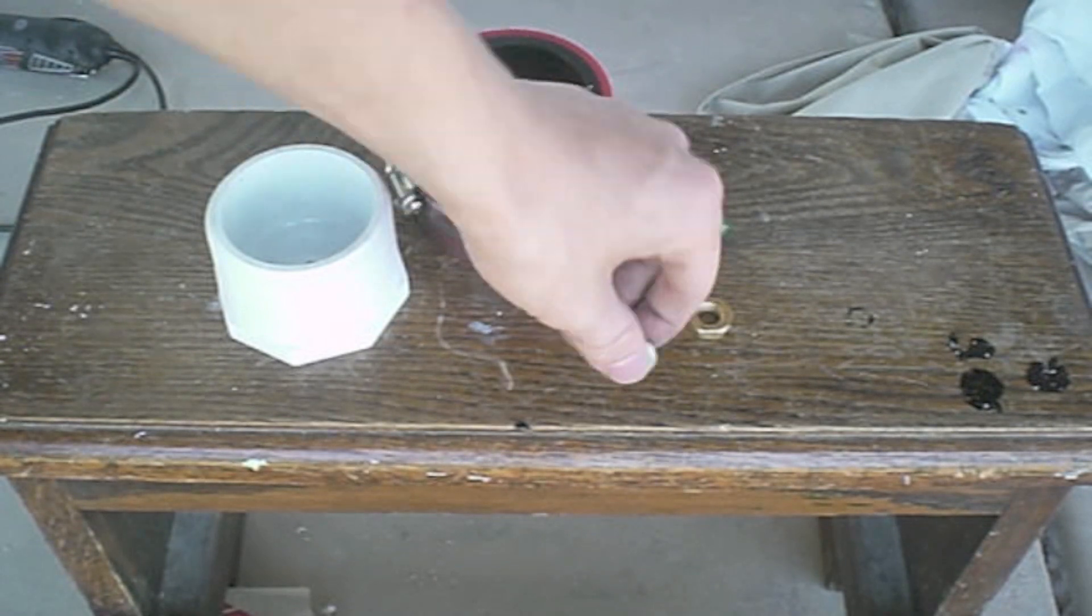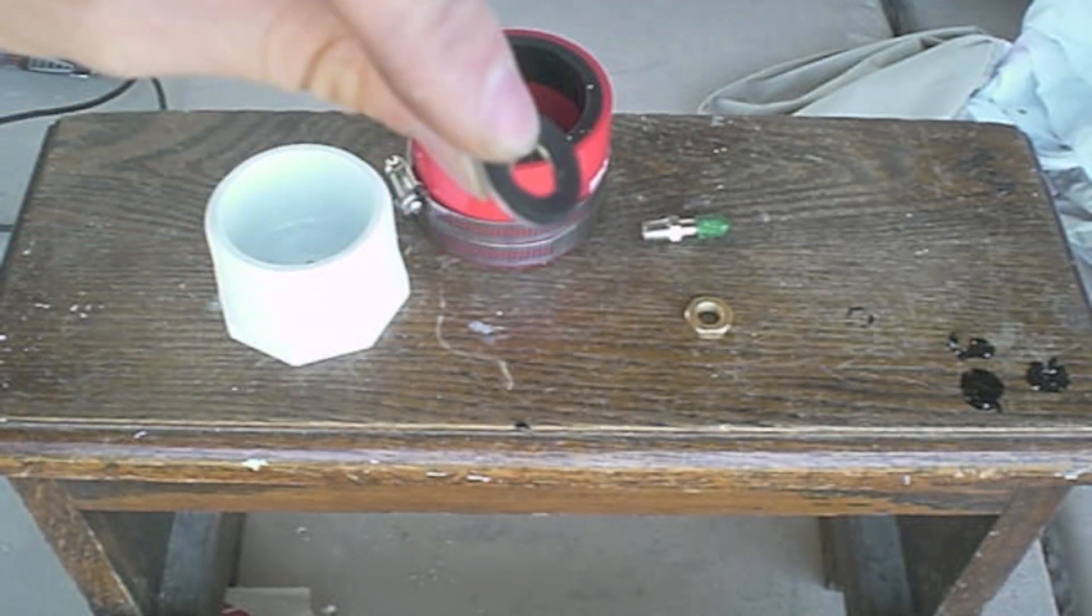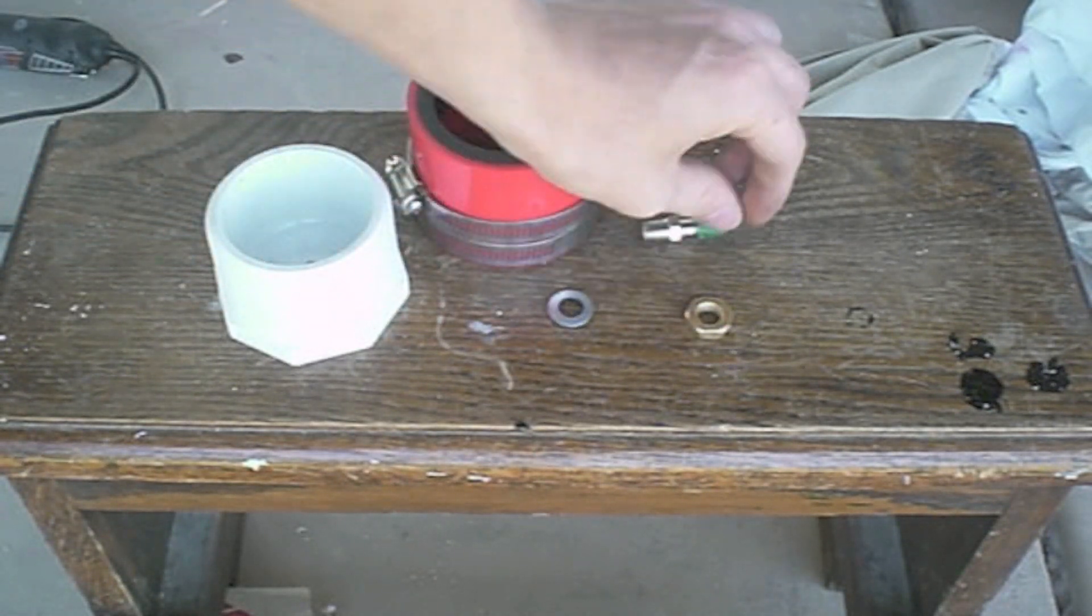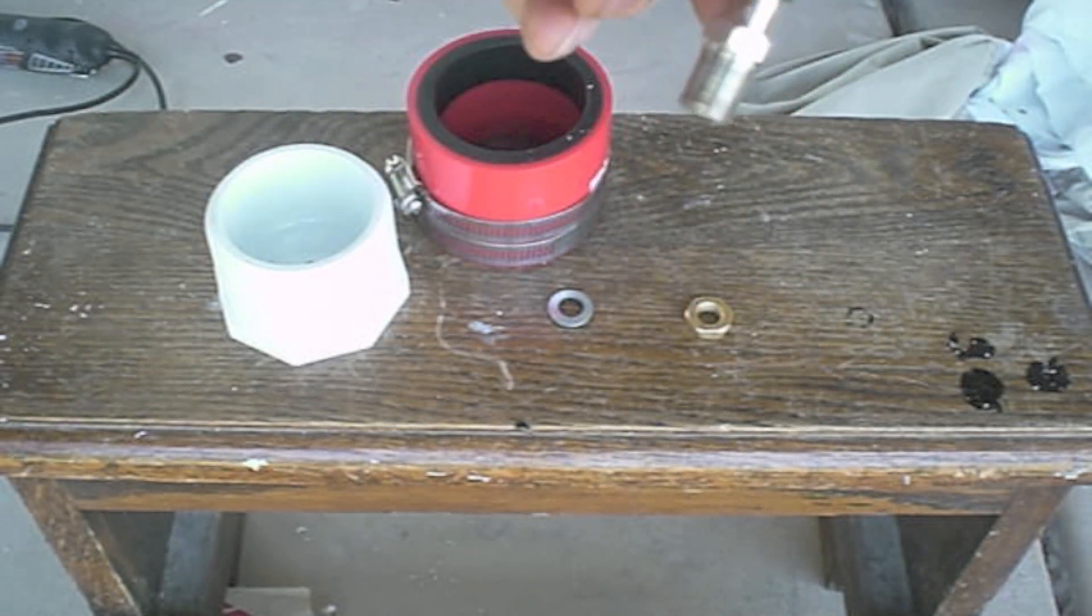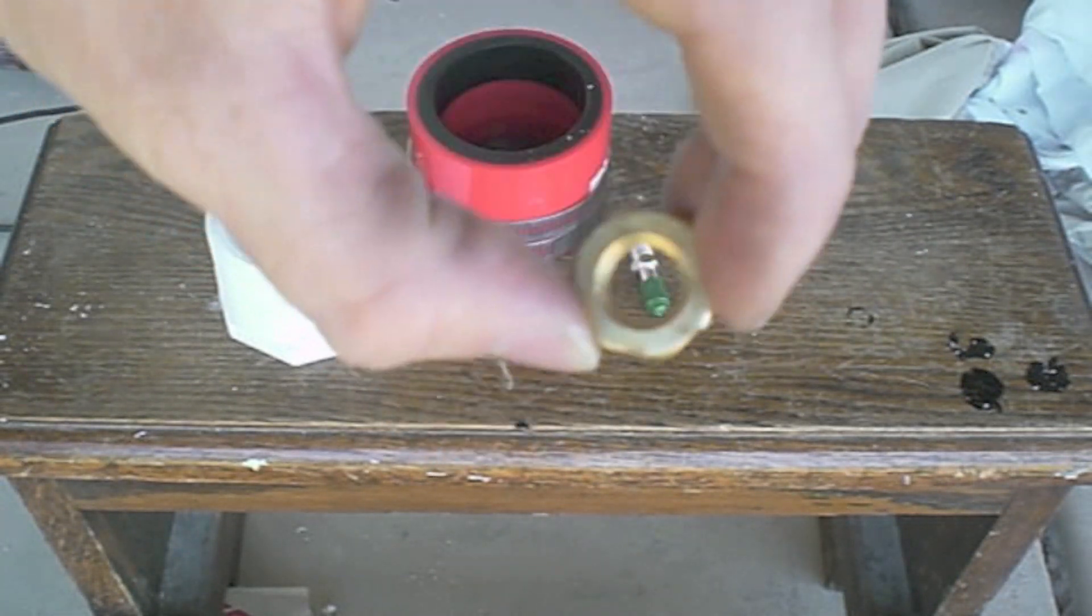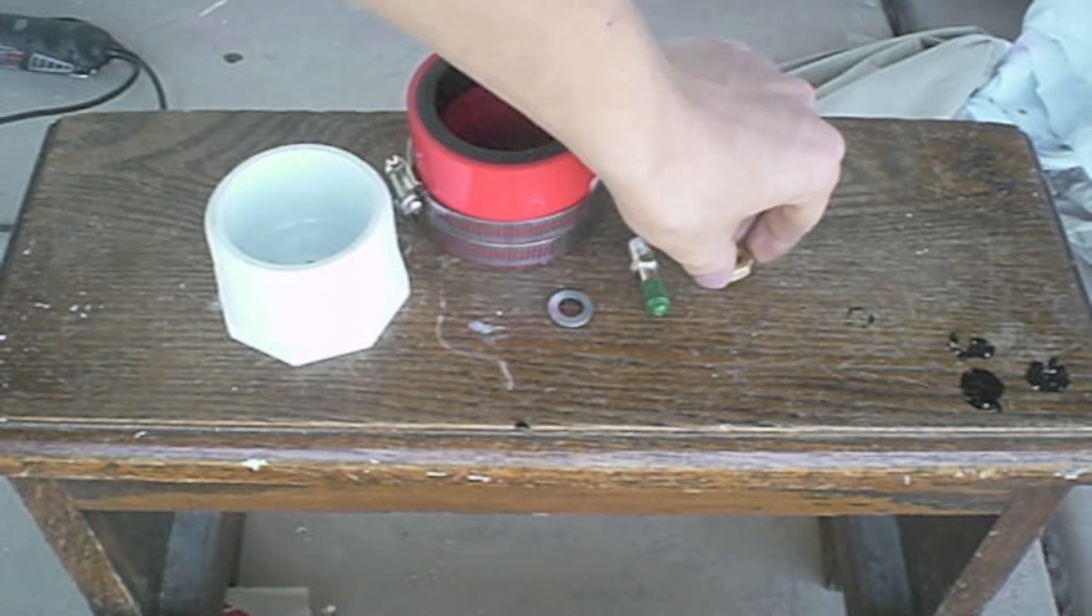The next thing you'll need is a washer and a gasket together, a Schrader valve, and the 1 1/8 locking nut for your Schrader valve.